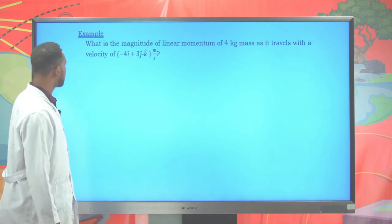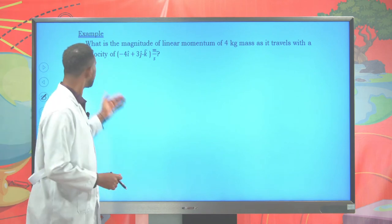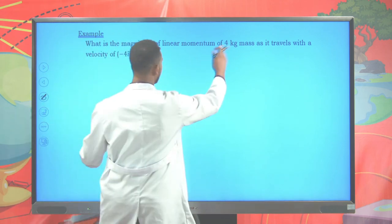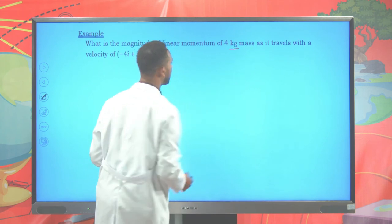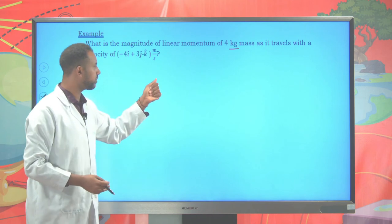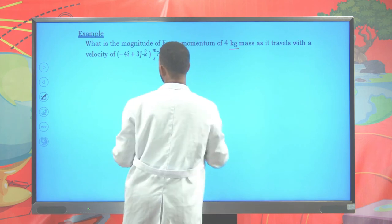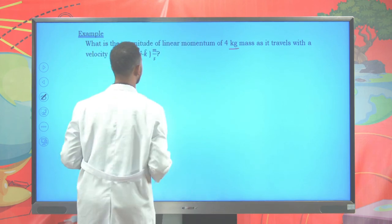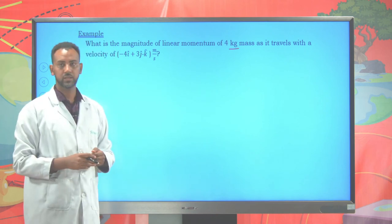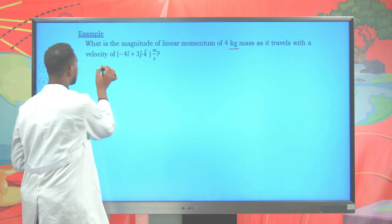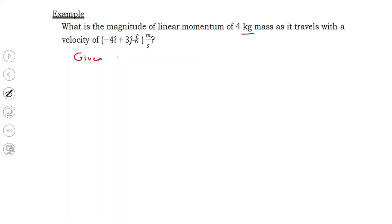Keep this in mind and let's try to solve one example. What is the magnitude of the linear momentum of a mass of 4 kilograms, where the velocity is given as negative 4i plus 3j minus k meters per second? The given quantities are: mass equals 4 kilograms, and velocity v equals negative 4i plus 3j minus k meters per second.